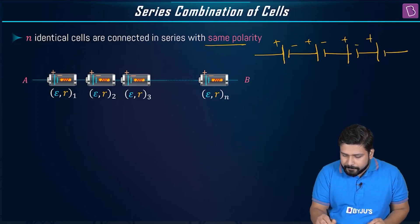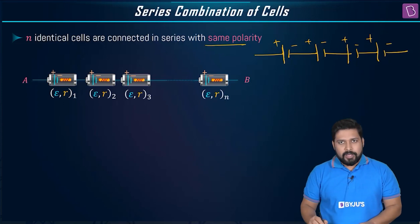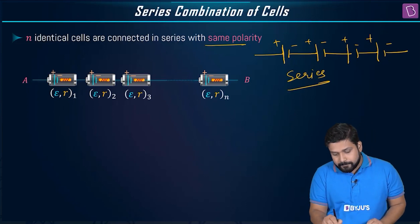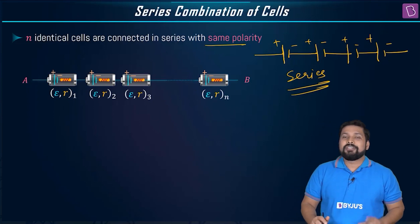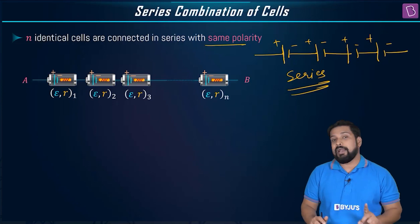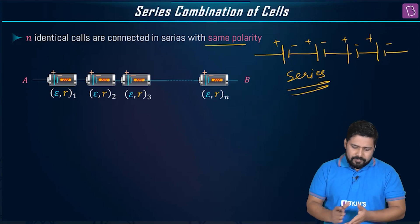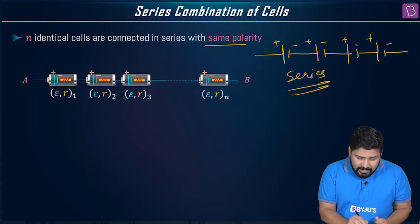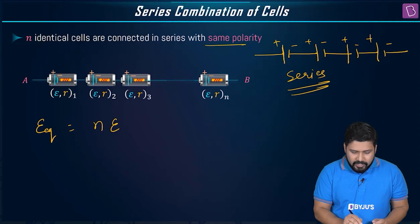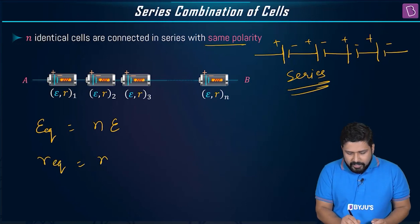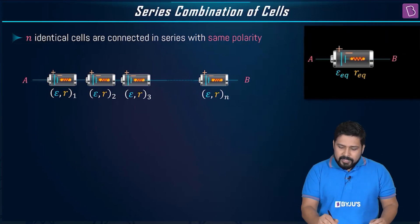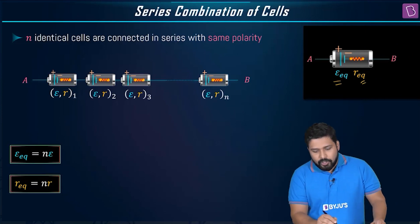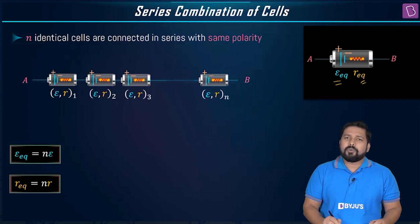This is how you should be connecting them — this is the meaning of same polarity in a series connection. So if we have n number of cells where e1 = e2 = e3, the equivalent EMF will be n times e, and the equivalent internal resistance r_equivalent will be n times r.